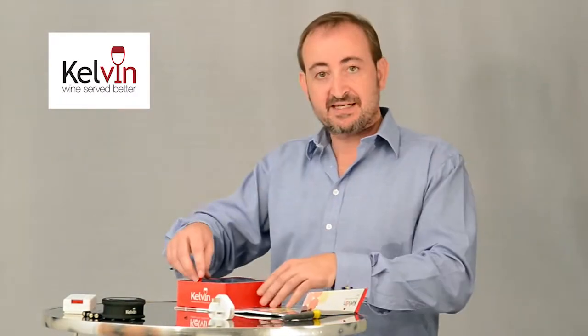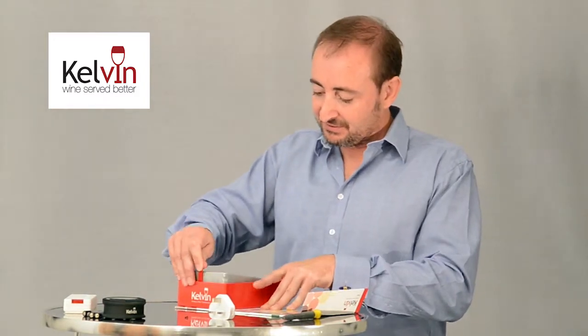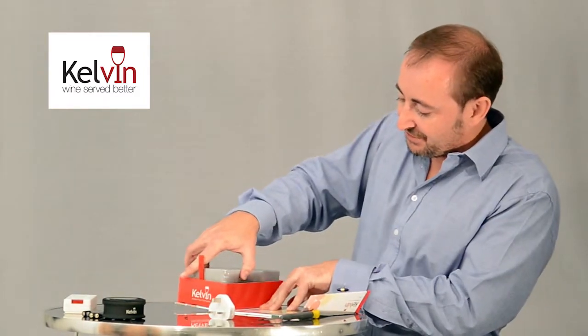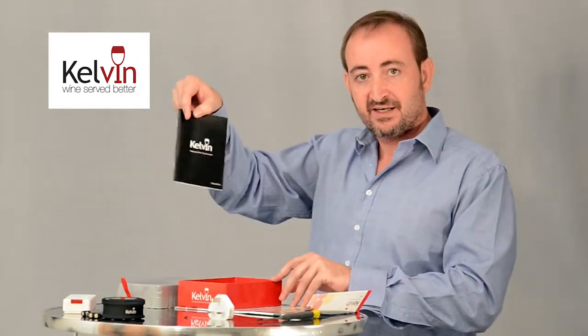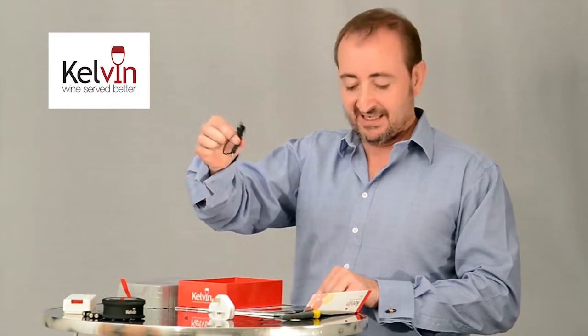In the box you'll find a red tag, give that a gentle pull and that will allow you to take the tray with the unit out and underneath the tray you should find an instruction manual and a USB lead.